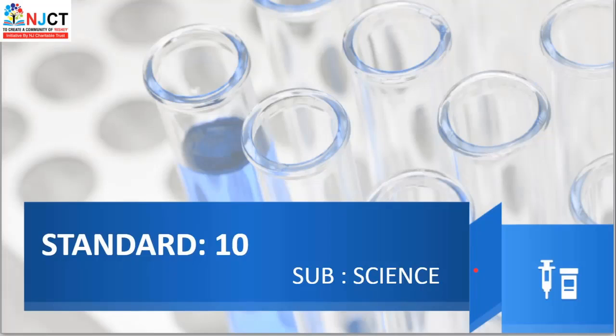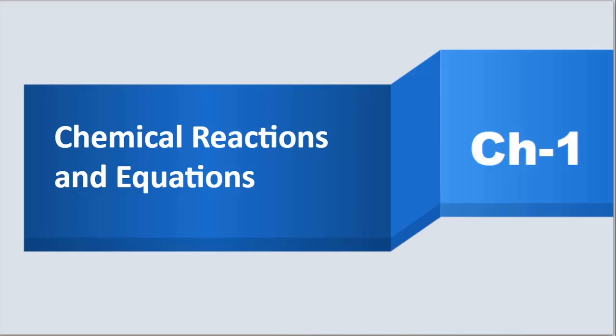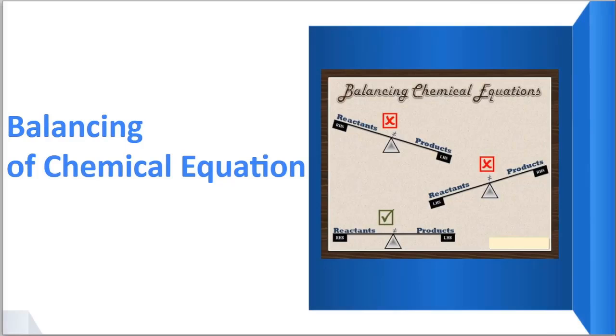Hello viewers, welcome to Standard 10, Subject Science. In our previous video, we started Chapter 1, Chemical Reactions and Equations. In this chapter, we learned about physical and chemical change and performed two activities, Activity 1.1 and 1.2, from which we learned how to construct a chemical equation. Today in this video, we are going to learn the new topic of this chapter: balancing of chemical equations.